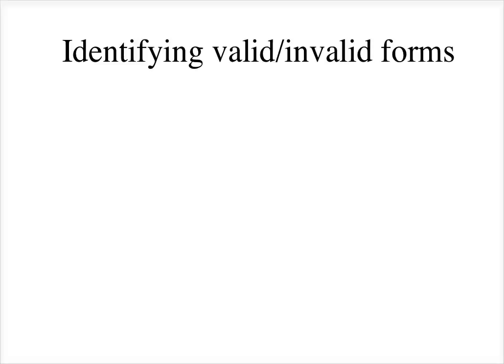This tutorial will explain one of the ways that we can determine if an argument is valid or invalid. We can determine an argument is valid or invalid by recognizing it as an instance of one of a number of valid and invalid forms.